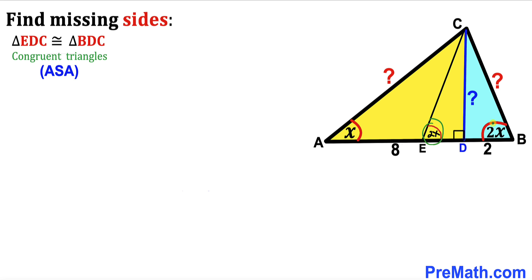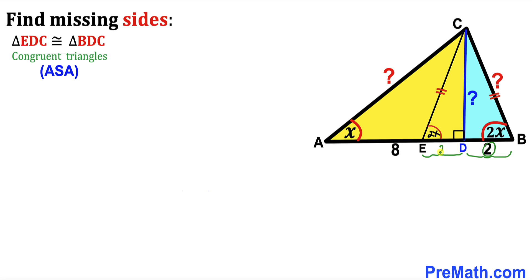Since both angles at D are 90 degrees and perpendicular CD is common to both triangles, the two triangles are congruent. Therefore, side length CE is congruent to side BC, and segment ED equals segment BD. Since BD is 2, segment ED is 2 as well.